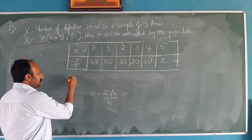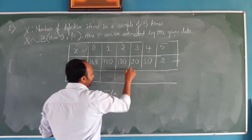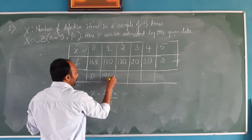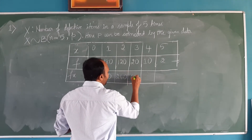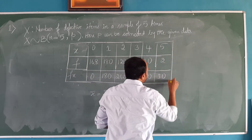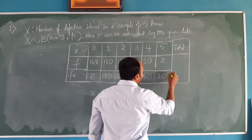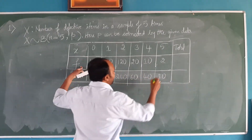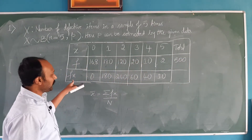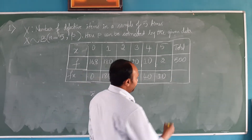These are x values, and these are the frequencies. We need to come up with one more row, that is fx. So 0 multiplied by anything is 0, then 180, here 240, here 60, 40, 10. These are the fx values. Now let us find the total. Total frequency — already we know that there are 500 samples. We need to add the fx values. The summation of fx value is 530.